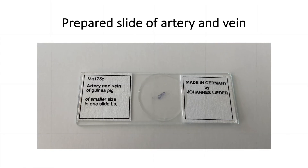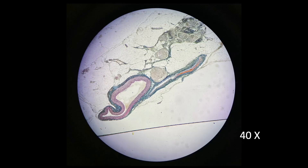Let's look at the prepared slide of artery and vein. This is a slide of artery and vein of a guinea pig. This is what you can see under the microscope at 40x magnification. You need to identify which one is the artery and which one is the vein by studying the structure.